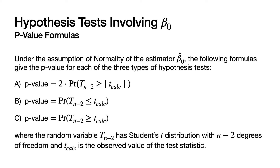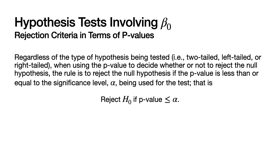In addition, the p-value formulas are the same as they were for tests involving beta_1. And the rejection criteria in terms of p-values is the same as always: reject the null hypothesis if the p-value is less than or equal to alpha, the significance level chosen for the test.